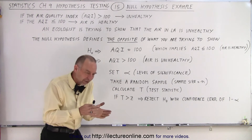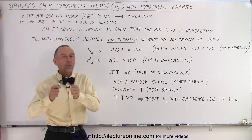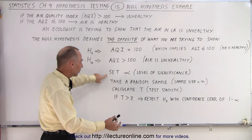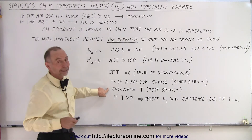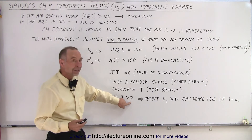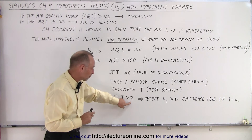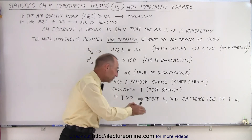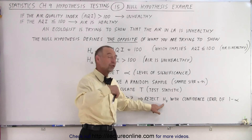The null hypothesis is typically the opposite of what you're trying to show, and the alternate hypothesis is equal to what you're trying to show. Now you set the level of significance, then take a random sample of size N, then calculate the test statistic T. If the test statistic T is greater than Z — the Z score that defines the boundary of the critical region — then it falls into the critical region and we reject the null hypothesis.